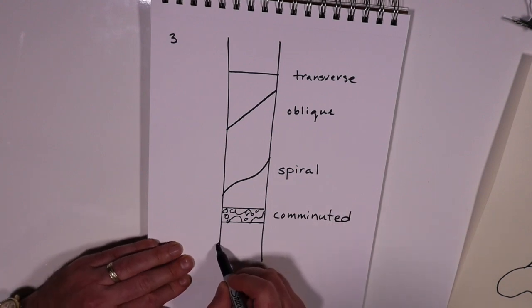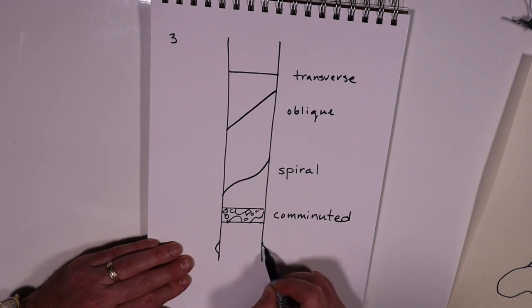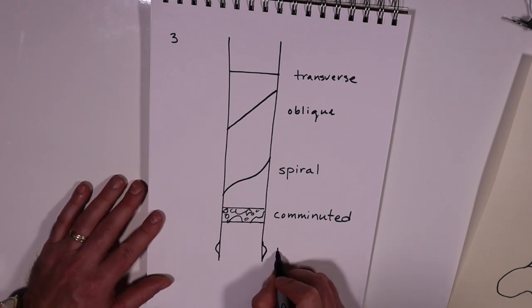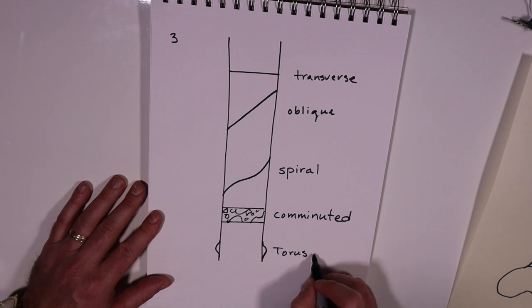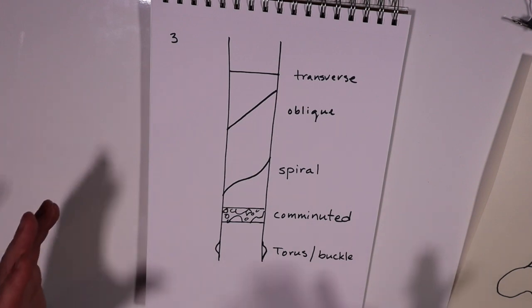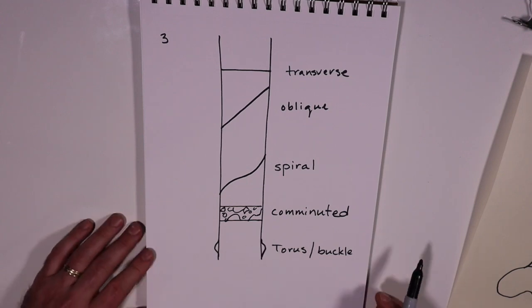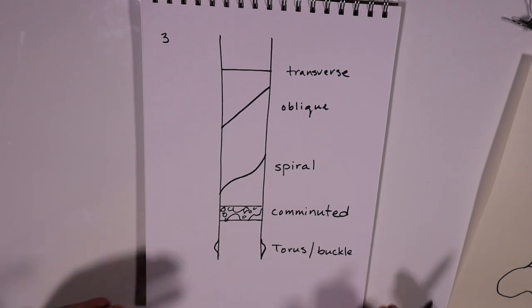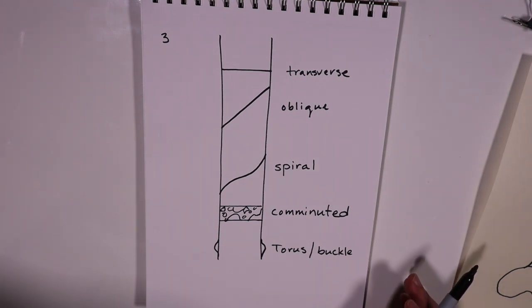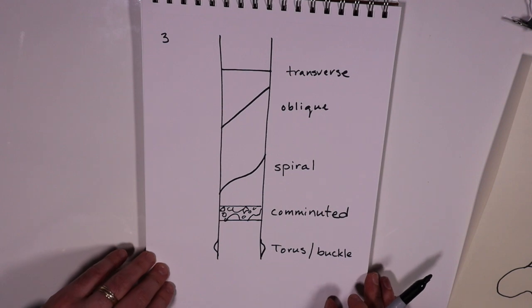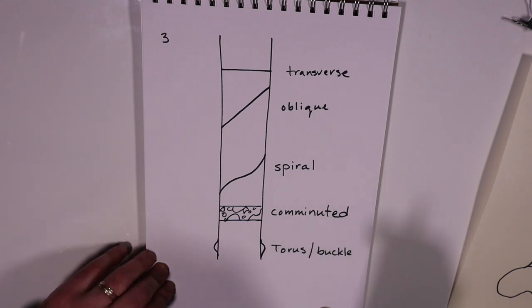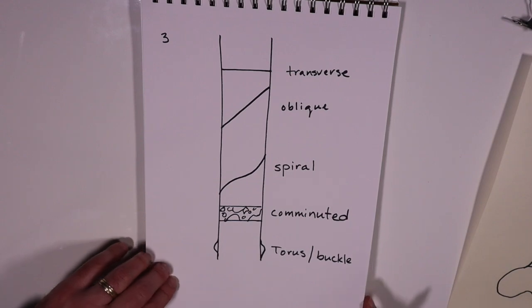And you also have another fracture type that is specific to pediatric populations, and that is our torus fracture or buckle fracture. And with a true torus fracture, you don't see a fracture line. All you see is a kink or a buckle in that outer cortex, but again, you do not see a fracture line. If you see a fracture line, it's not a torus fracture. And sometimes this can look like a little hump or it can look like just a little angle in the cortex of the bone. Sometimes they can be very subtle. These are frequently missed. But that is a torus fracture.